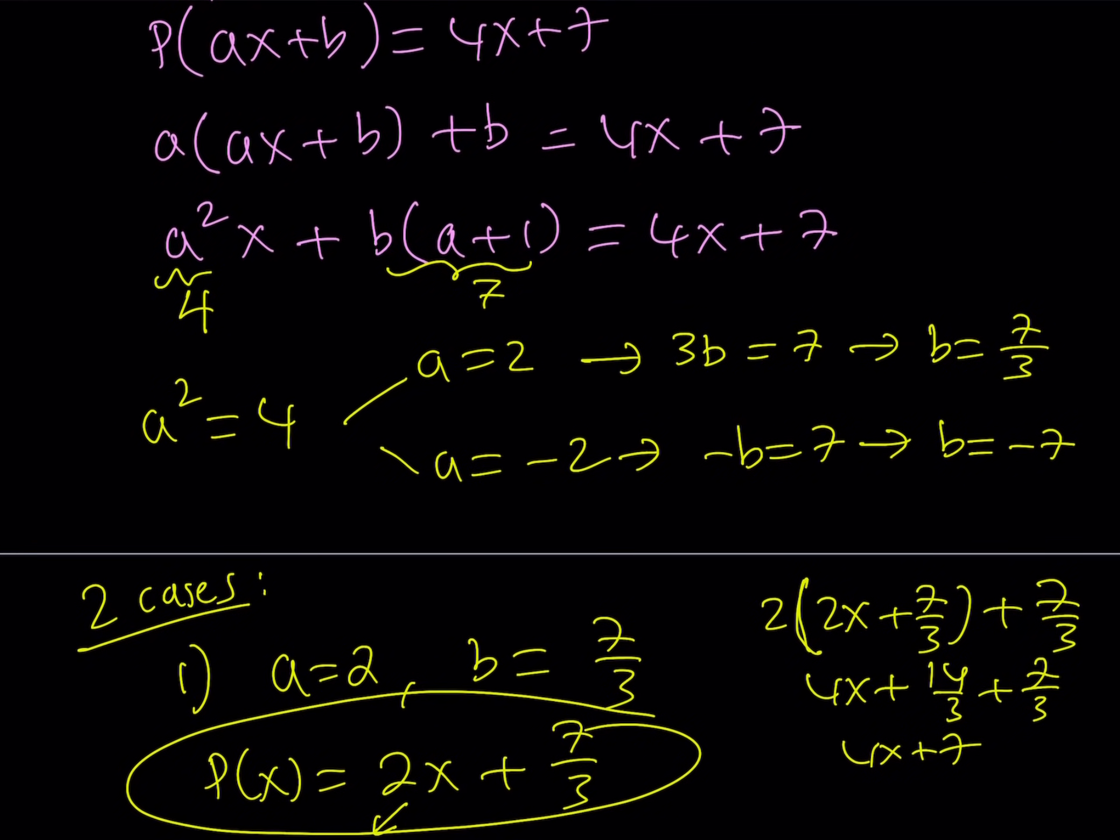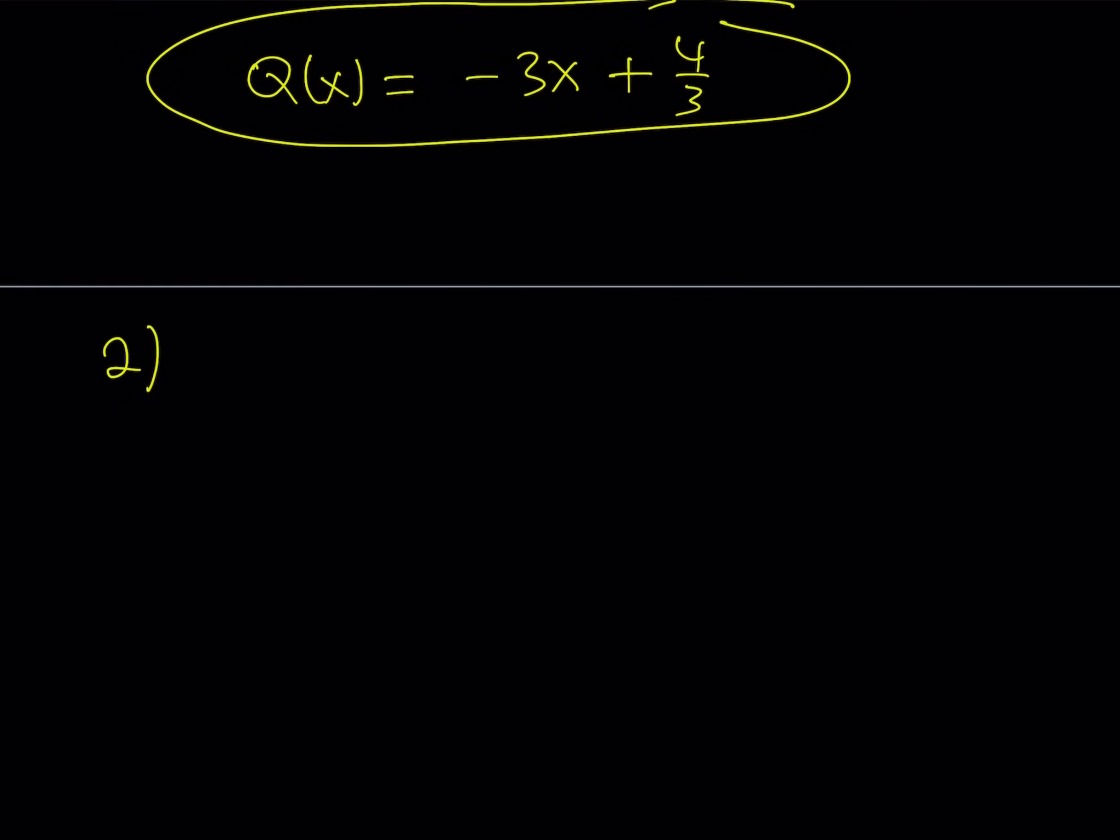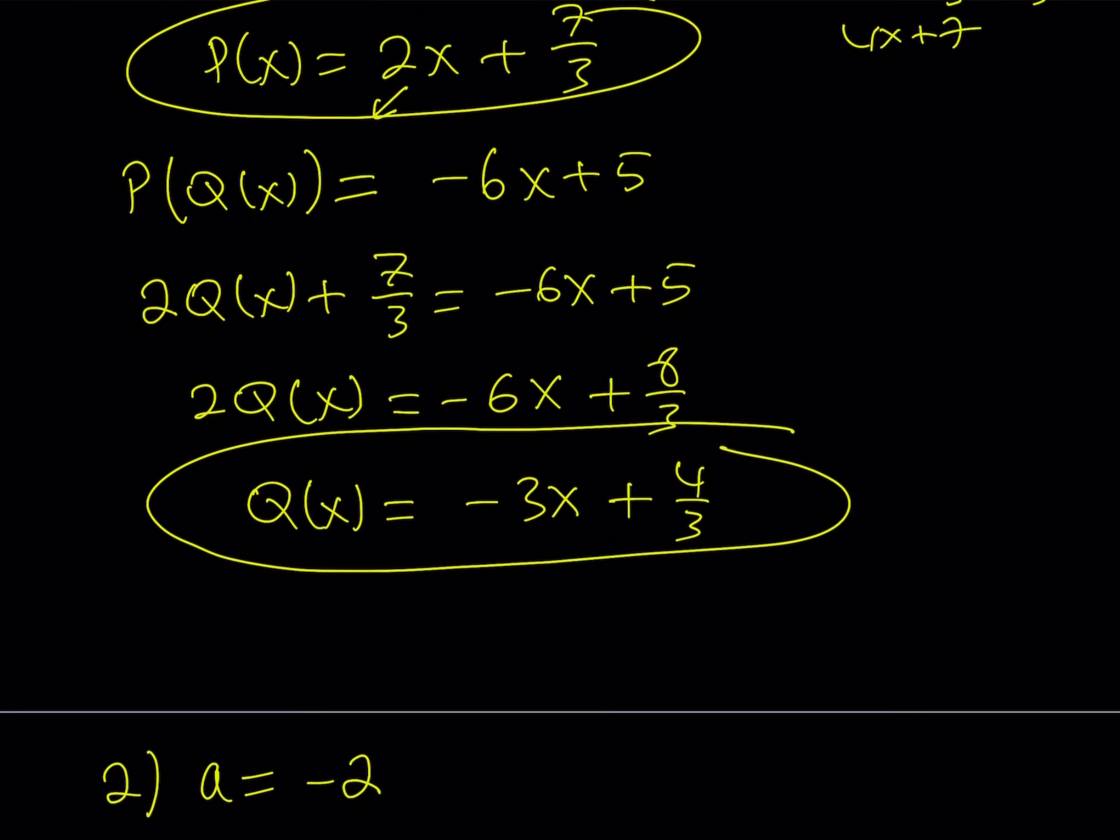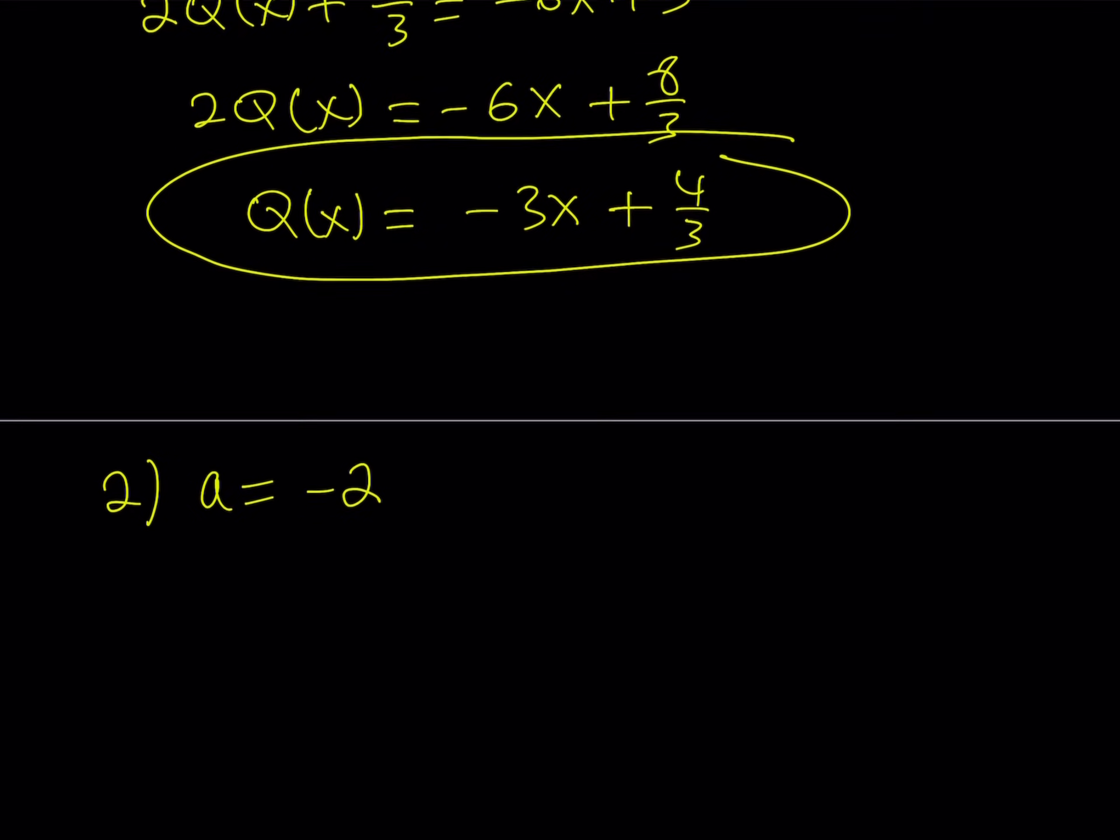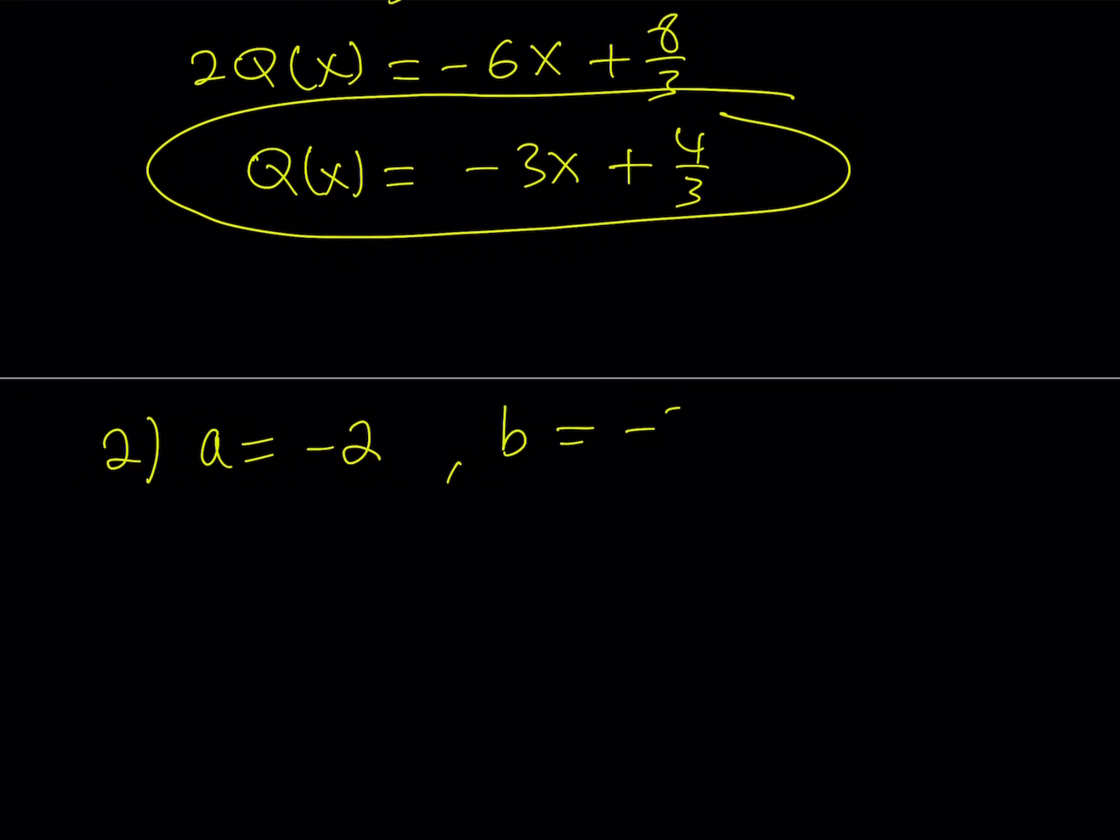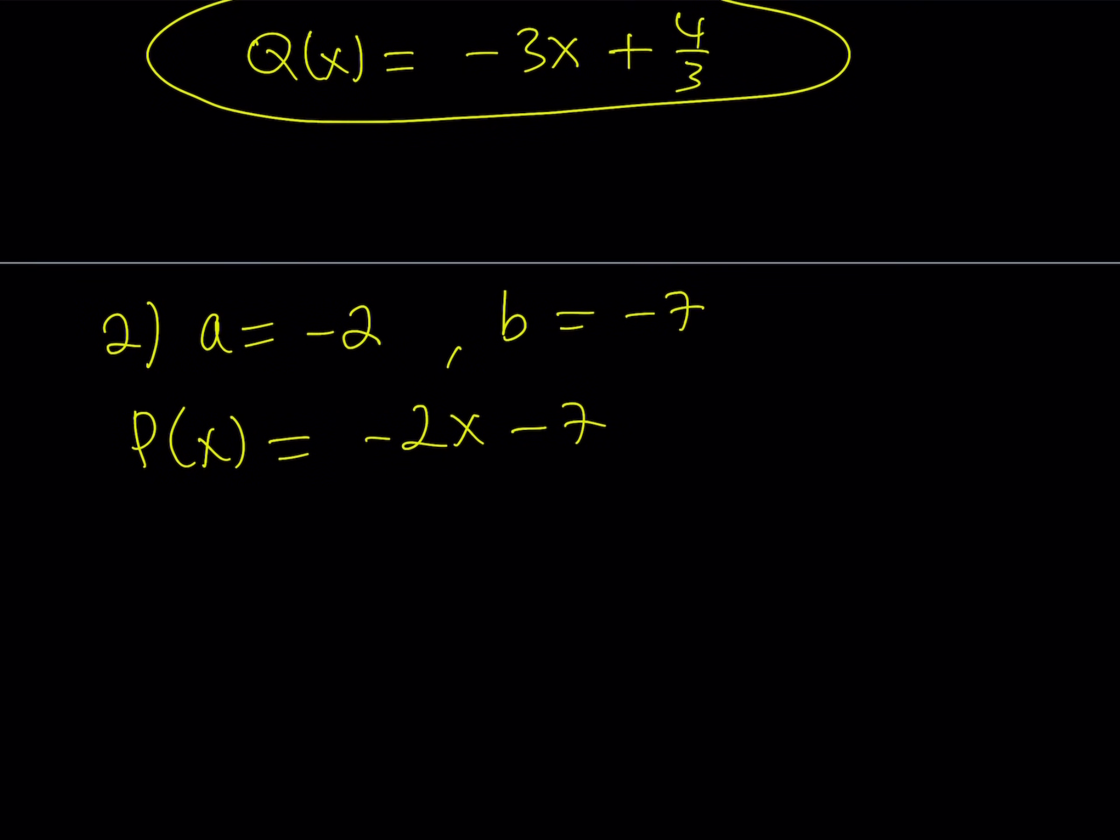Now remember the second case involves A being equal to negative 2. So if A equals negative 2, then this gives us what? It should give us a B value and it did. It was B equals negative 7. So B equals negative 7 in this case. So that gives us P of X as negative 2X minus 7.